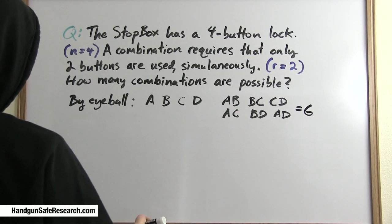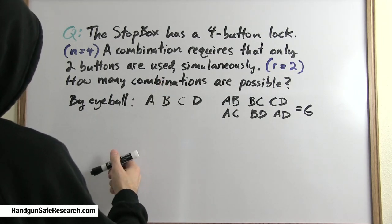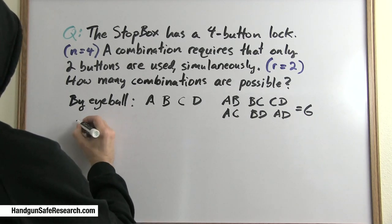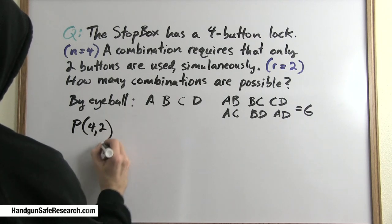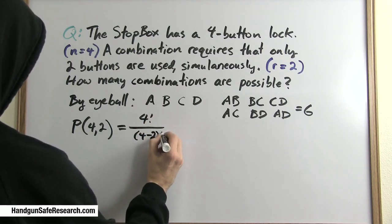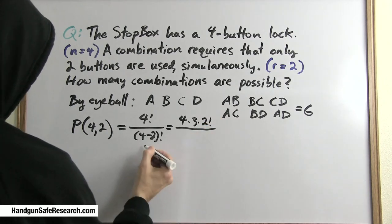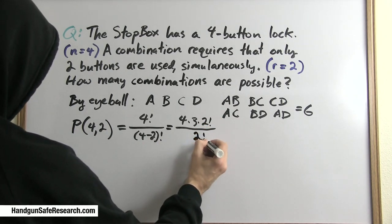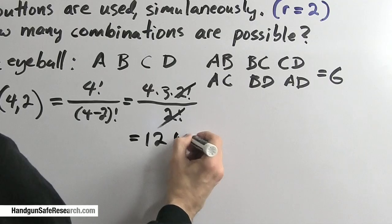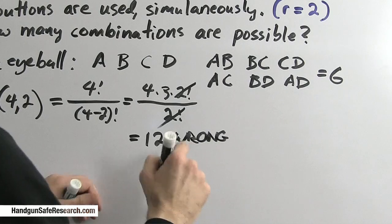Now what I want to do is apply the permutations calculation and then the combinations calculation, which I think will illustrate what is meant when we say that with combinations order doesn't matter. So I will plug numbers into this: 4 factorial over (4 minus 2) factorial. I'll expand the top like this because I can see right here that 4 minus 2 will leave me with factors I can cancel, and I've got 12, which is clearly wrong.